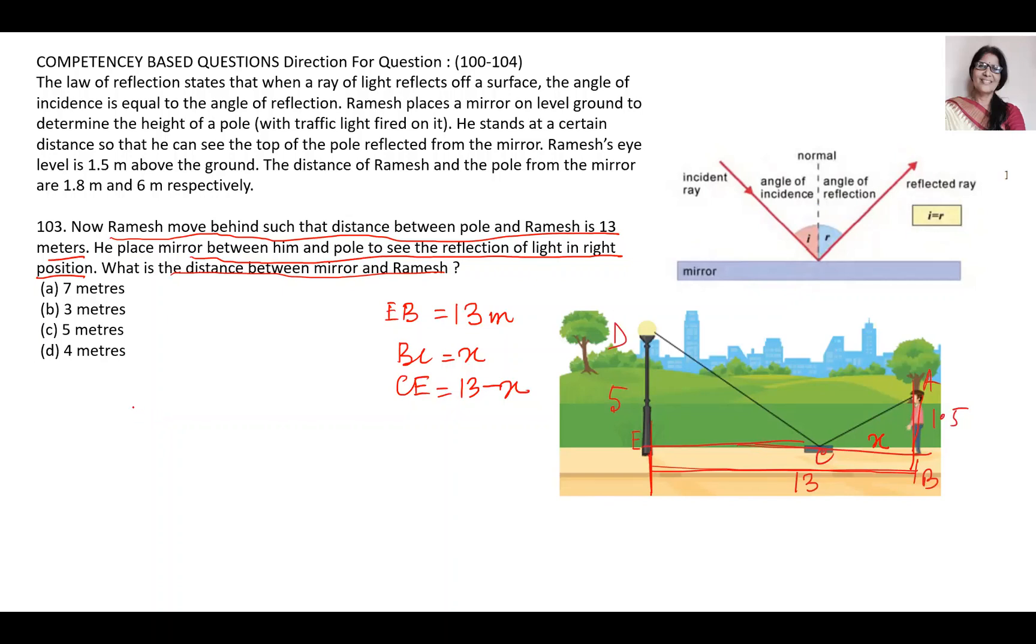Again, I will write the similarity. AB by DE is equal to BC upon EC. So 1.5 upon 5 is equal to BC, I have taken X, divided by EC which is equal to 13 minus X. Now we cross multiply. 5X is equal to 1.5 into 13 minus X.